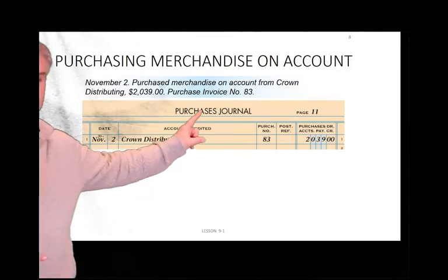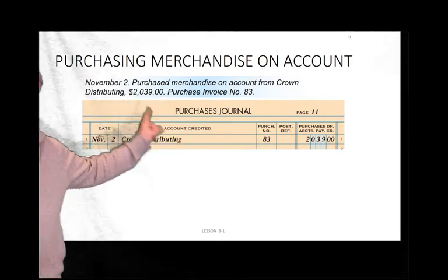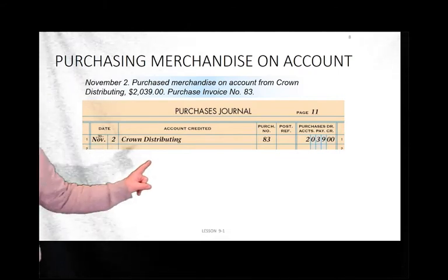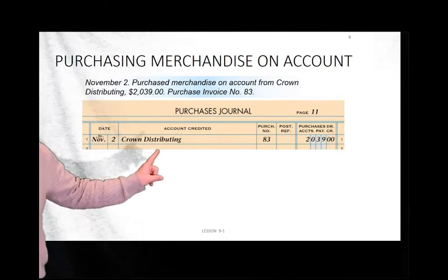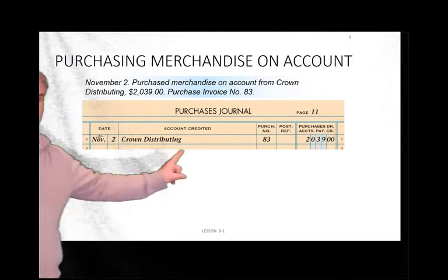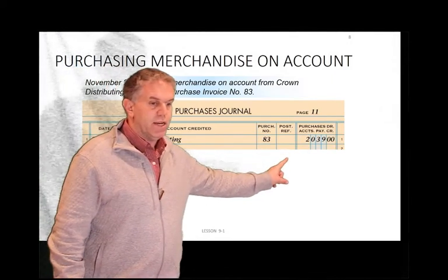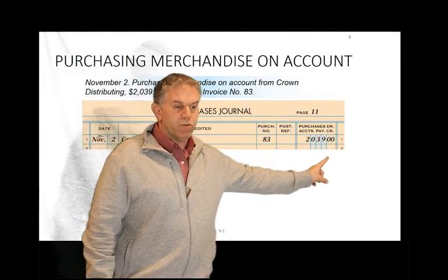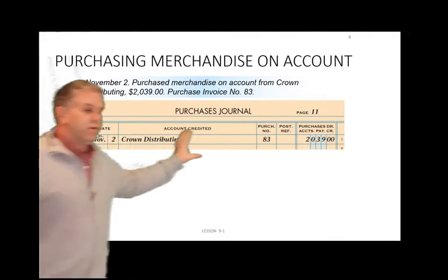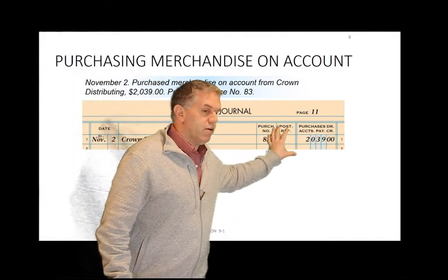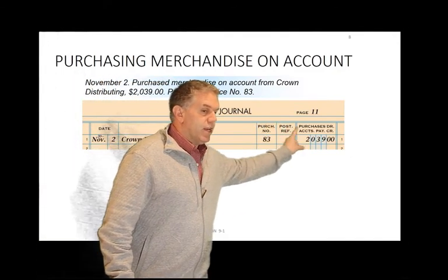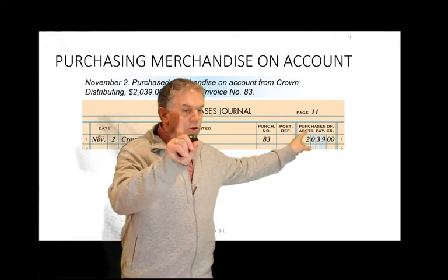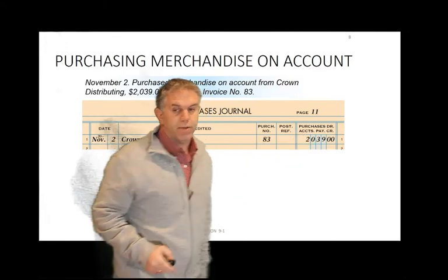Here's how my transaction in my journal is going to look. I put the date — November 2nd. Under accounts credited, my accounts payable goes to Crown Distributing. The purchase invoice number is 83, and my amount is $22,039. You need to realize that this one number represents both a debit and a credit — even though it's one column, it still represents both sides of the entry.